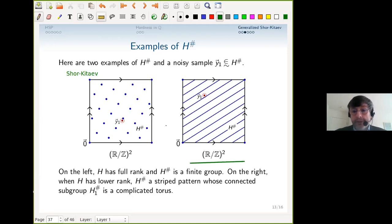But in this new case—the deficient rank case—if H is one-dimensional and we're working in Z^2, then H^♯ is also one-dimensional. The dimension of H^♯ is the same as the rank deficiency of H. Now you cannot repair individual coordinates of y_1—you have to do something else. H^♯ is a stripe pattern whose connected subgroup is a very complicated torus. This is a representation of something happening on an exponentially fine scale. The slope is very complicated and unpredictable, and you have a serious decoding problem.